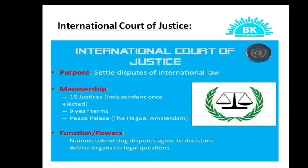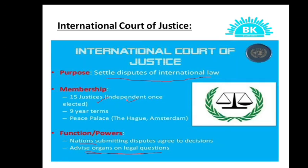The main purpose of the International Court of Justice is to settle disputes of international law and to advise organs on legal questions. Other organs like Economic and Social Council, Security Council, and General Assembly receive legal advice from the International Court of Justice. It also settles disputes of international law between member countries. The 15 judges are independent once elected — they do not represent their country; they work for the whole world. They are elected for 9-year terms and the court is located in The Hague.